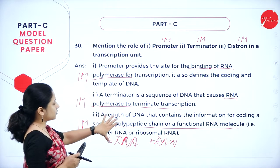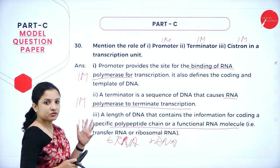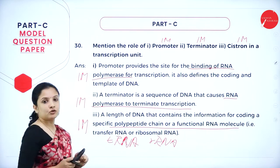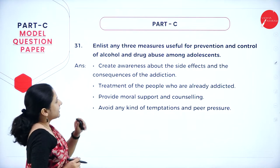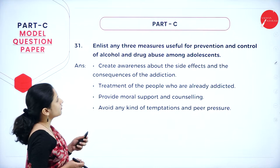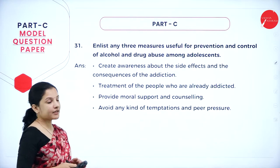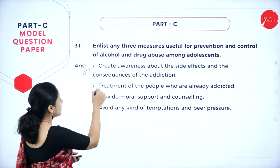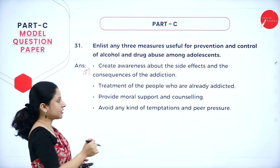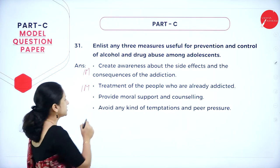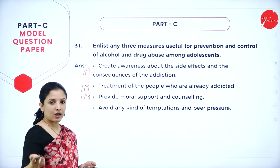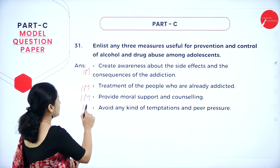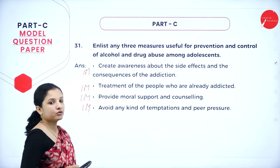If you write the first two but don't know the answer for cistron, you will lose one mark and get two. Even if you know only two out of three, please attempt the third — at least you may get two marks. Next question: enlist any three measures for prevention and control of alcohol and drug abuse among adolescents. First: create awareness about side effects — one mark. Second: treatment of people already addicted — one mark. Third: provide moral support and counselling — one mark. Also write: avoid temptation and peer pressure — one mark. Write these points for three marks.